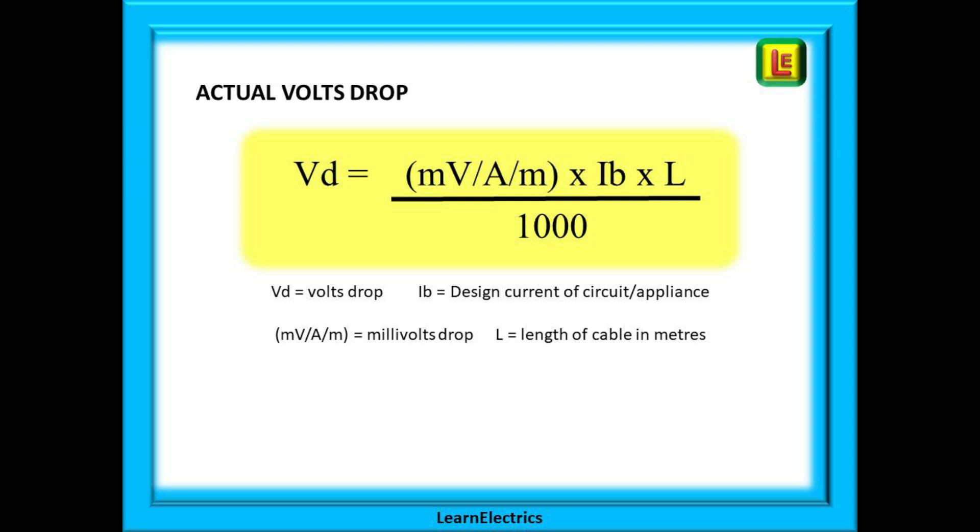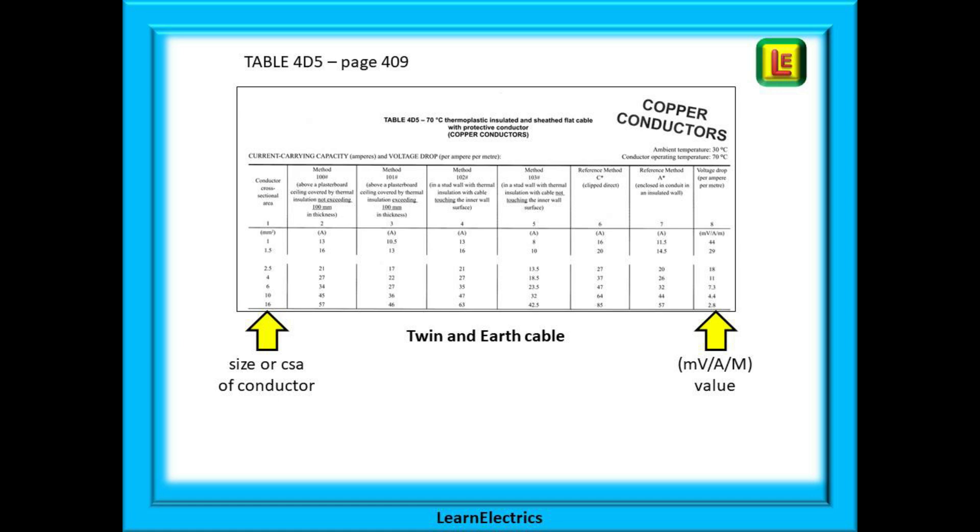Here we have the formula to use for calculating the actual voltage drop in a cable. It looks complicated, it isn't. Just below the yellow box we have listed the four terms that we use in the calculation and what they mean. And the number here, 1000, is there to convert millivolts back to ordinary volts so that we can make a direct comparison to the maximum permitted voltage drop from table 4AB earlier. Every cable has its own data page, and in this video we will focus just on twin and earth cable or flat cable as the book calls it.